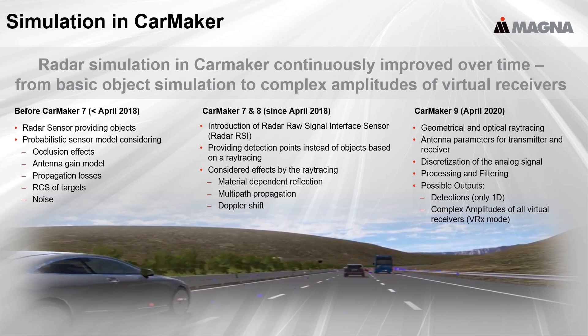In that release, the ray tracing was extended by an optical approach, which represents the behavior of an electromagnetic wave much better. Furthermore, these reflection points were not reported directly as detections anymore. They were put into a discretized range Doppler map that was used as a starting point for post-processing steps like filtering and peak finding. The new model provided detection points for the complex amplitudes of all virtual receivers as an output. These two modes will be presented on the next slide.